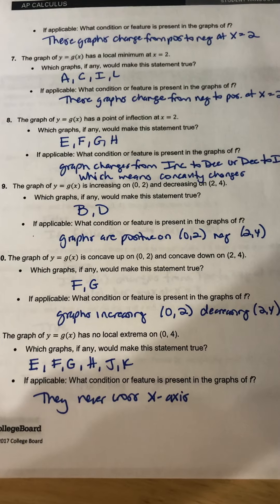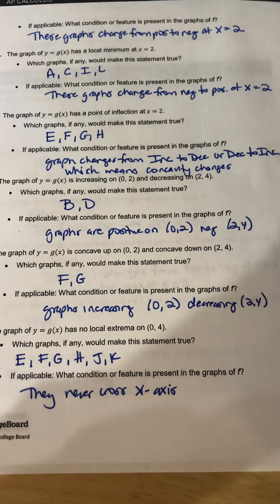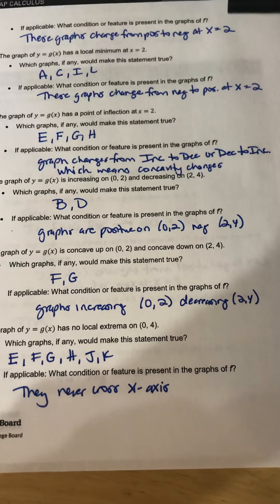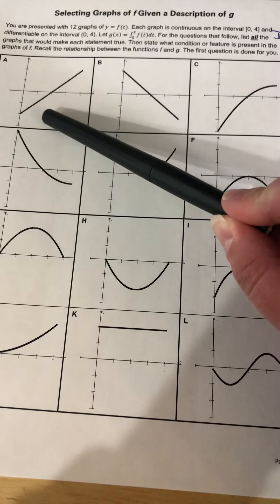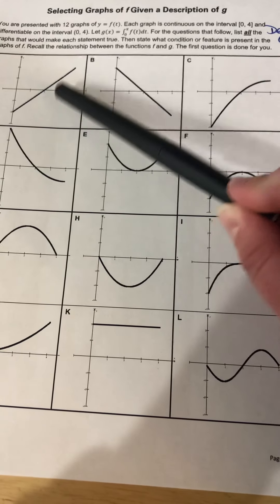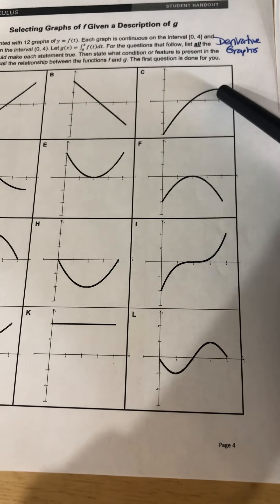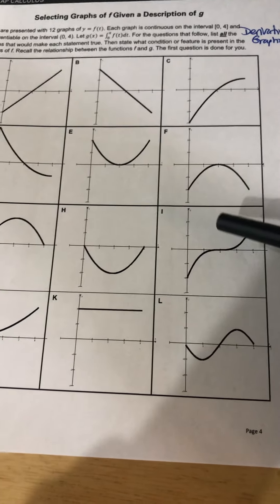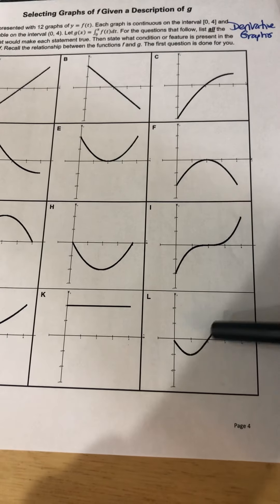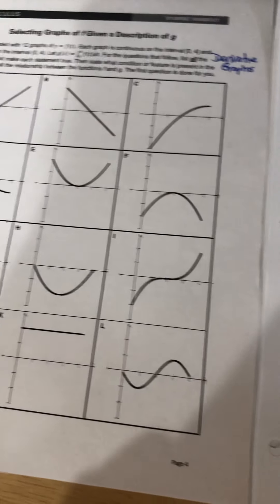Number 7 says look for a local minimum at x = 2. This is the opposite of the one we just did, so you're looking for graphs that show going from negative to positive at x = 2. A goes from negative to positive at 2. C goes from negative to positive. I is going from negative to positive. And L is going from negative to positive — all of them at x = 2. So that means it's a minimum.